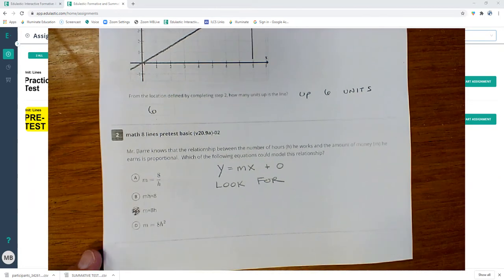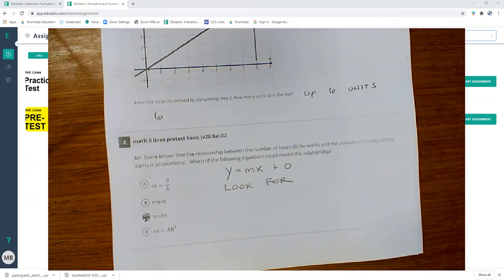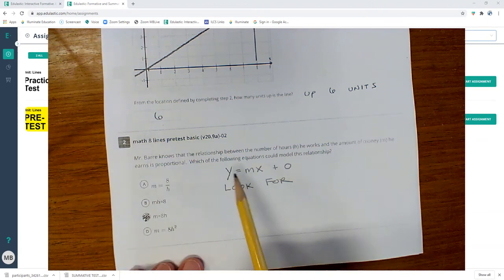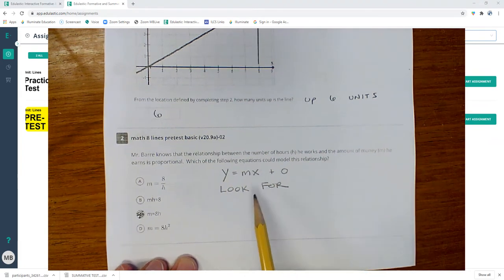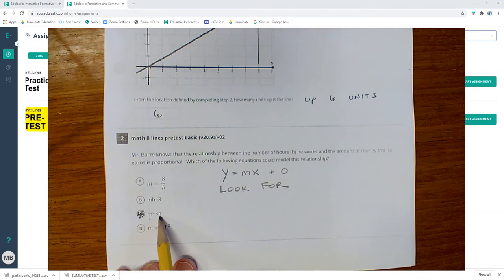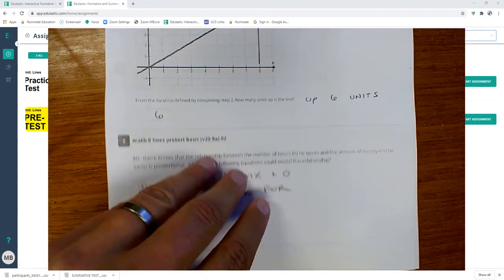Mr. Barr knows the relationship between the number of hours he works and the amount of money he earns is proportional. Which of the following equations could model this? Proportional means it's y equals mx plus zero. Y equals eight x, that is a proportional relationship. I'm looking for m equals eight h, that's a proportional relationship.